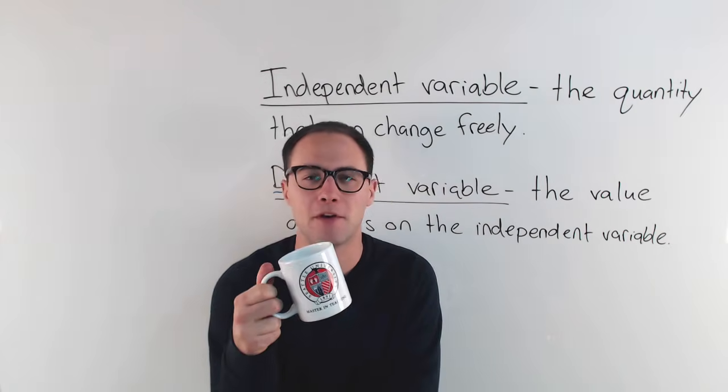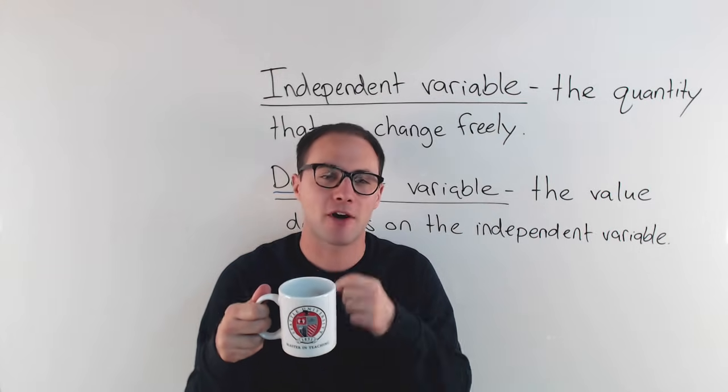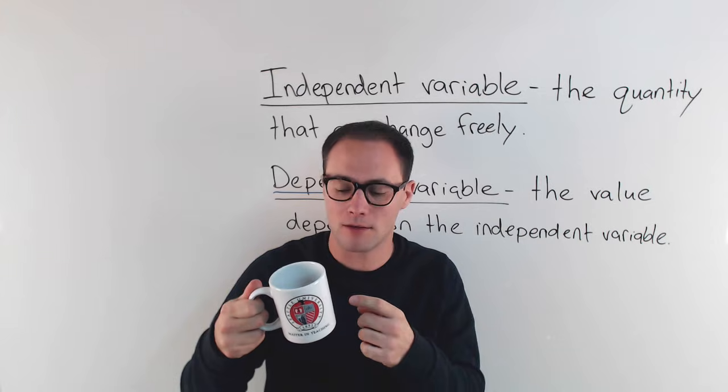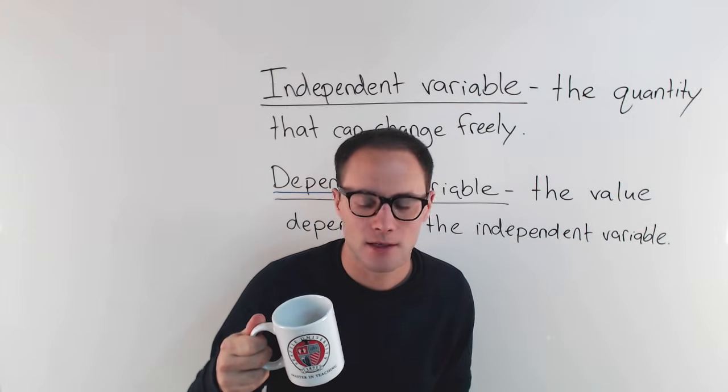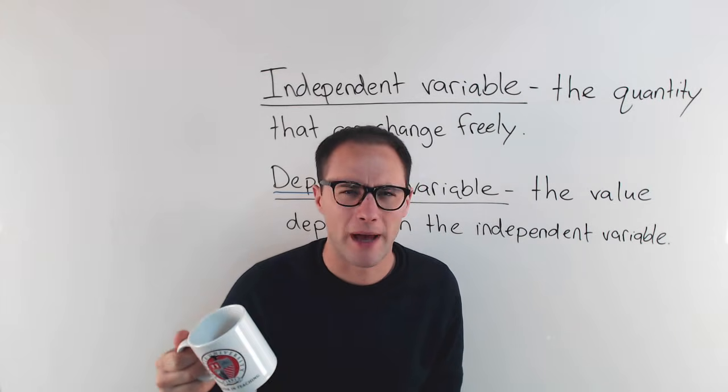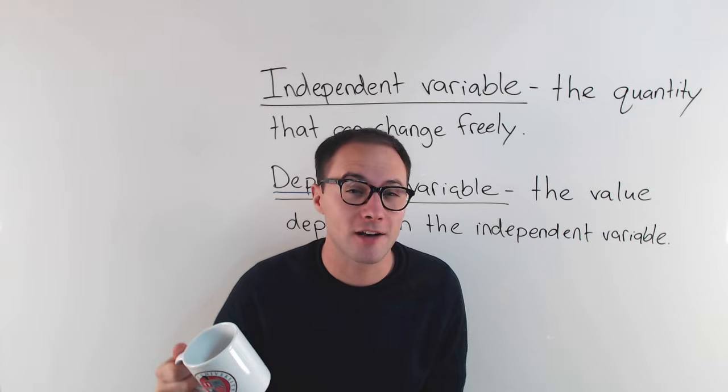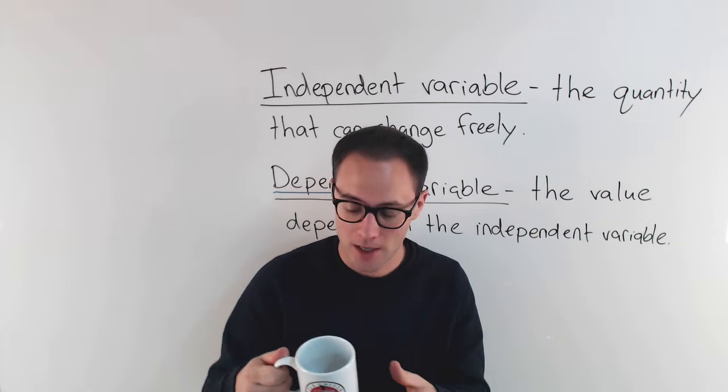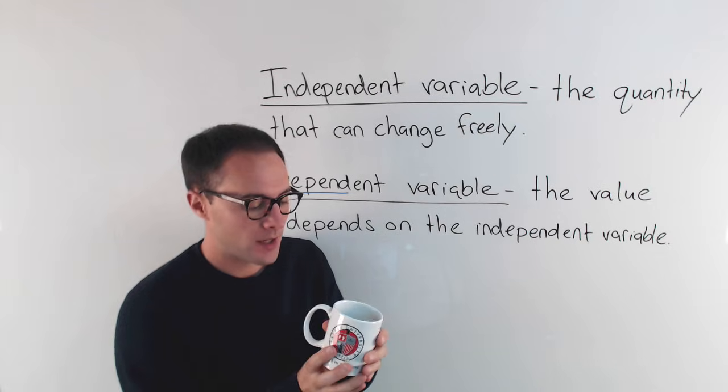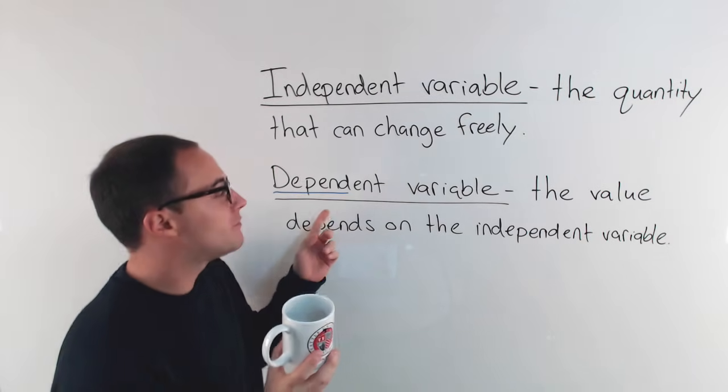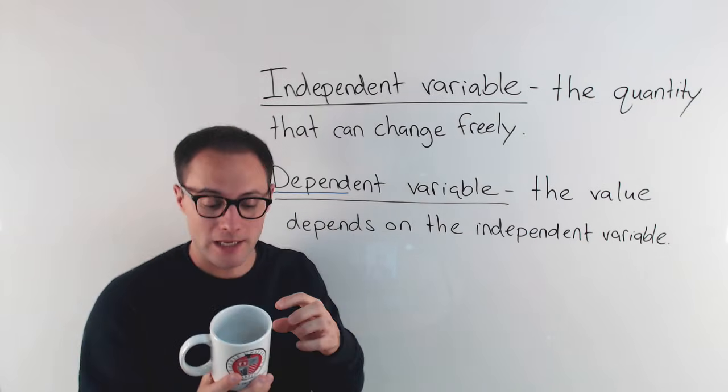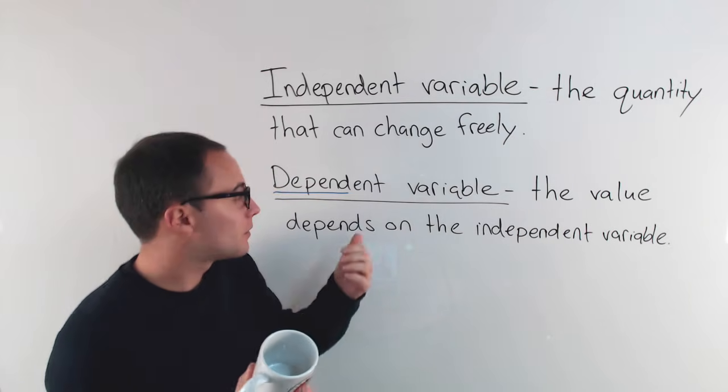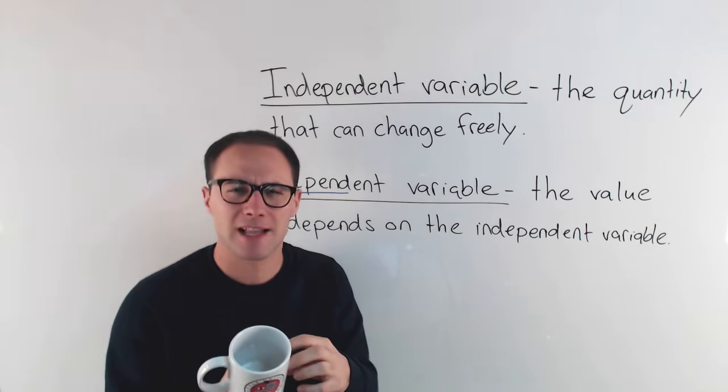Here's my favorite mug. If I have coffee in this mug and I'm drinking some, and I ask you, how much coffee is left? You would say, well, it depends. It depends on how much I drank already, right? So in that situation, the dependent variable would be what? Is it how much I've drank or how much is left? Well, the dependent variable would be how much is left.